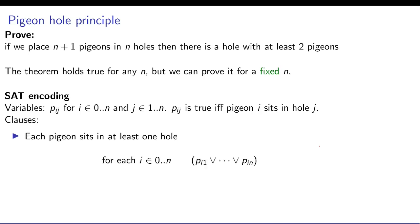The first clause is each pigeon sits at at least one hole. A pigeon must be sitting somewhere. So for a given i, there should be one j for which your pigeon is sitting in some hole.